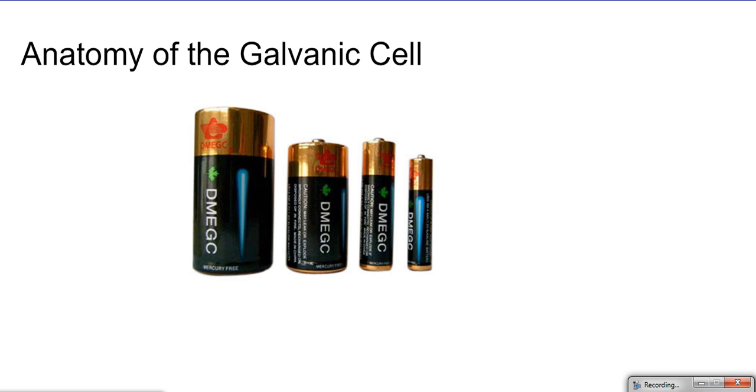In electrochemistry there are two types of cells. A galvanic, also known as a voltaic cell, is what you know as a battery. All batteries are spontaneous.